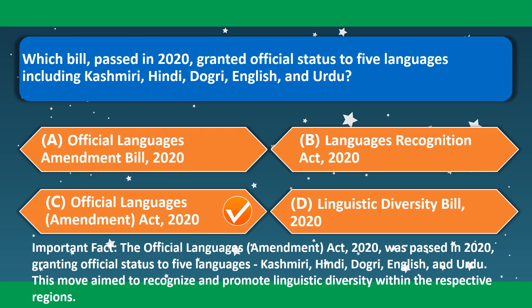Which bill passed in 2020 granted official status to five languages including Kashmiri, Hindi, Dogri, English and Urdu? The Official Languages Amendment Act 2020. This act was passed in 2020 granting official status to these five languages, aiming to recognize and promote linguistic diversity within the respective regions.